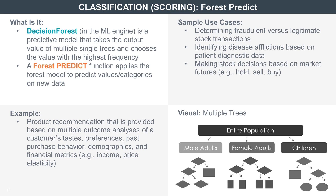Like single tree PREDICT, FOREST PREDICT applies a model that has already been created on brand new data to create data categories. In this case, FOREST PREDICT implements the random forest model. Random forest models agglomerate many single trees and usually result in improved speed and predictive accuracy.